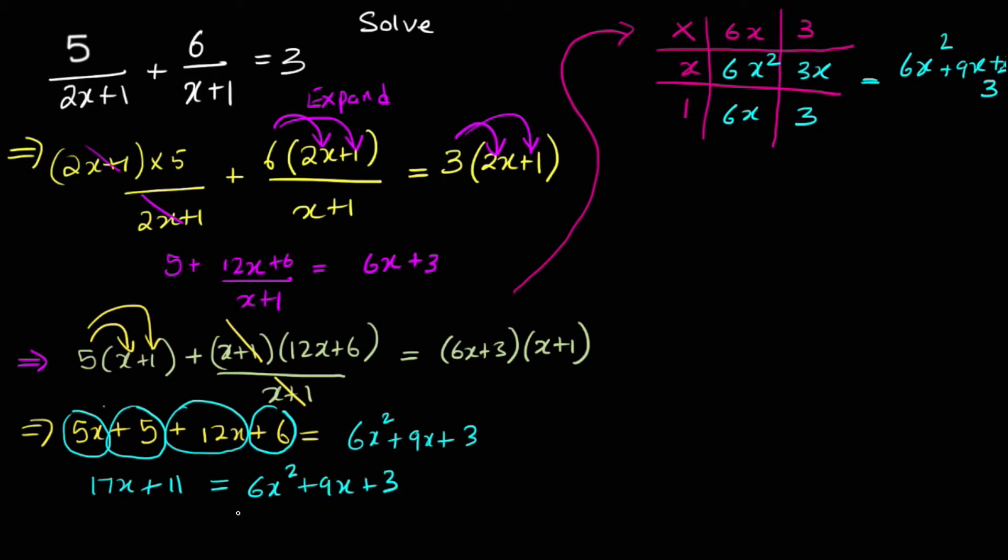Now what do you notice right now at this stage? That it is a quadratic. Therefore we have to make it equal to 0. Good. So in order to solve a quadratic equation, we need to make it equal to 0. How do we solve a quadratic equation? It has to be equal to 0. It does equal to 0 after we rearrange, but how do we solve quadratic equation? Put it in two brackets. What do you call that? Factorize it. We factorize it.